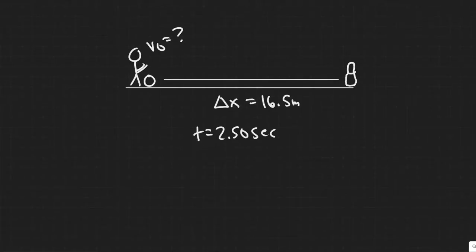Okay, so in this problem we're told a bowling ball traveling with a constant speed hits the pins at the end of the bowling lane 16.5 meters long. The bowler hears the sound of the ball hitting the pins 2.5 seconds after the ball is released from his hands. What is the speed of the ball, assuming the speed of sound is 340 meters per second?